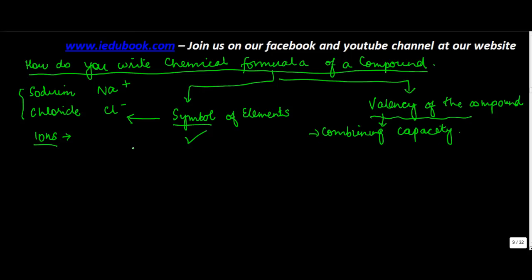What do you mean by combining capacity? If you consider each of these elements as a circle, or let's call them faces. Normally a human being would have only one face, just like sodium.